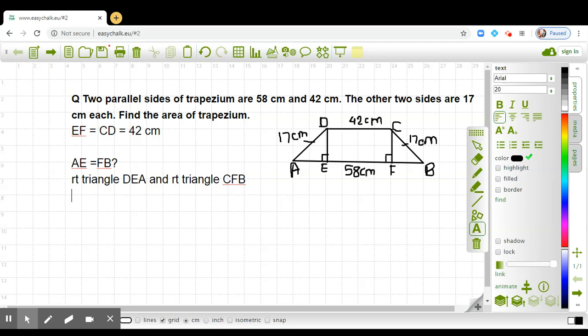Number one, right angle is common, and then hypotenuse is the same, and DE is equal to CF. So AE is equal to FB by CPCT—these are congruent parts of congruent triangles.